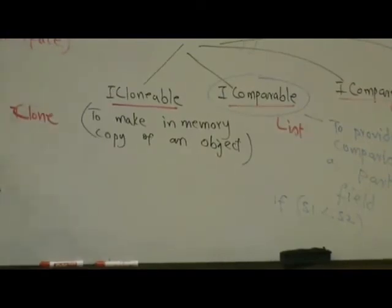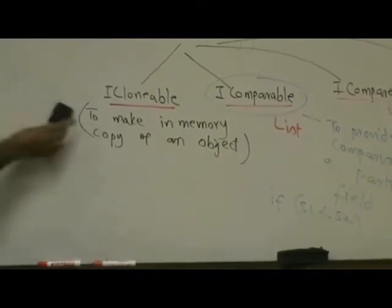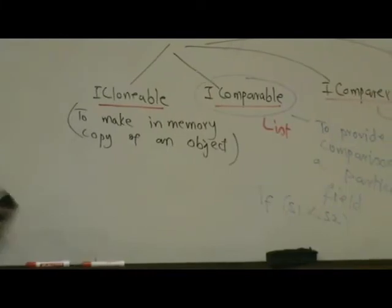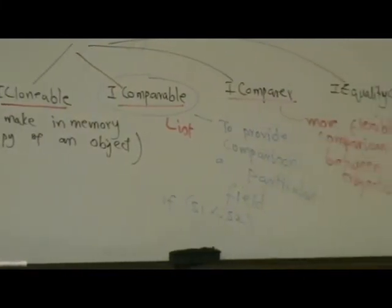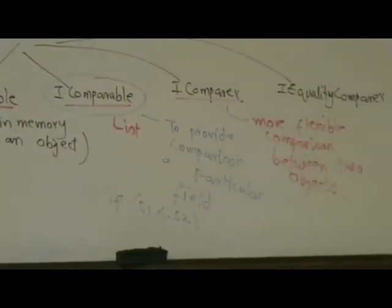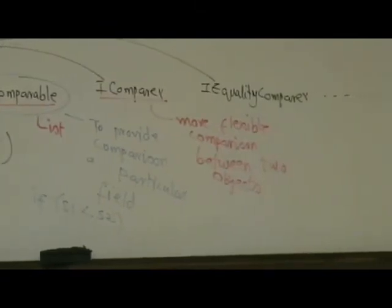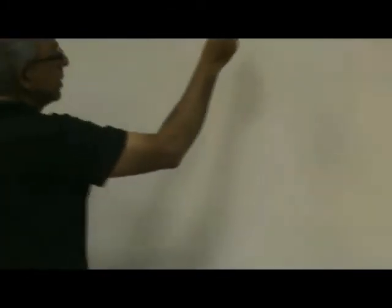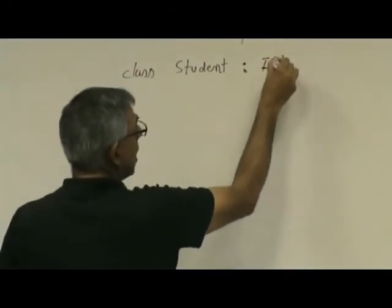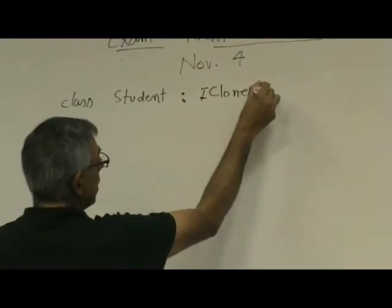So, let's start with the cloning first. Okay, so typically what we do is we say class student. And once again, assume we have those five fields over here. And if we want cloning capabilities over here, we will say colon ICloneable. Right?